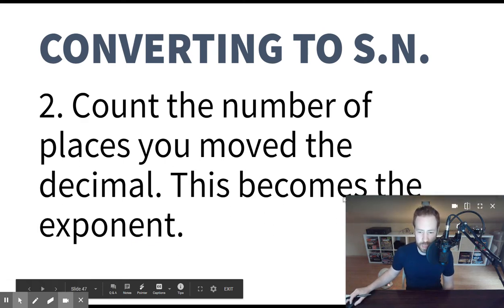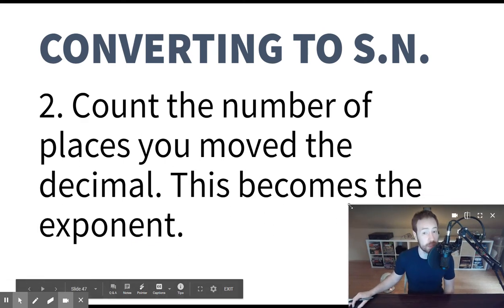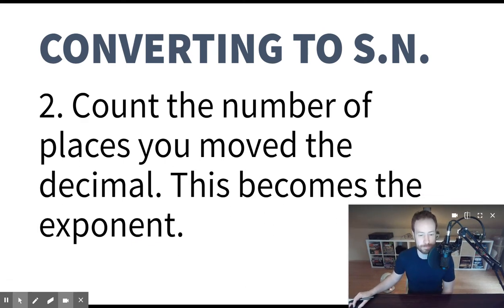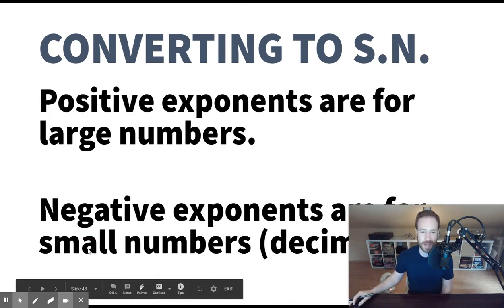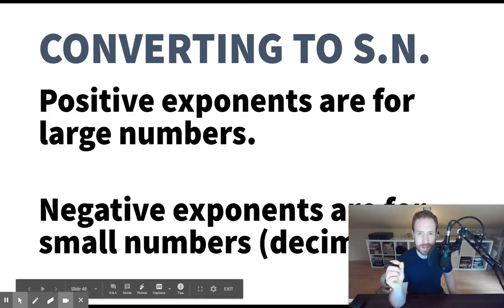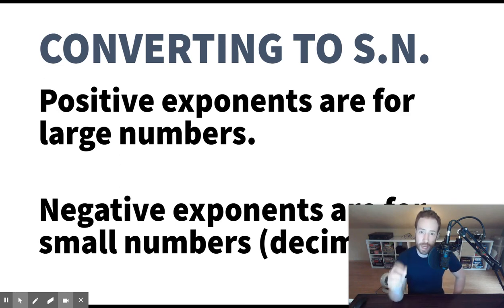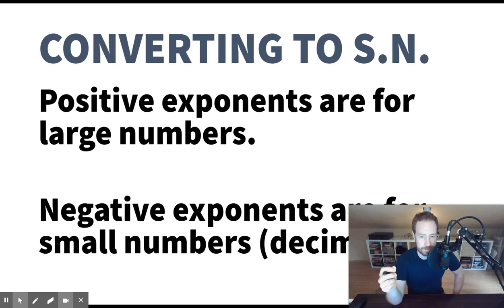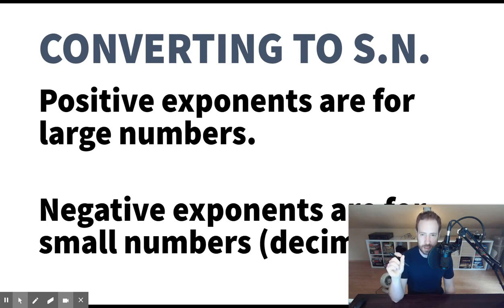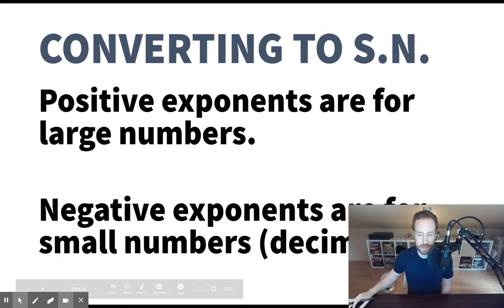As you move the decimal, count how many places you've moved it and keep track of that. Then the next step is to take that number — the number of decimal places you moved — and make that the exponent. And that's it. Let me do an example so you can see all of this.